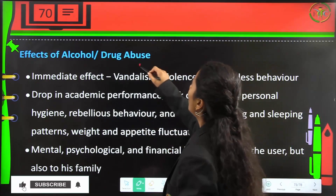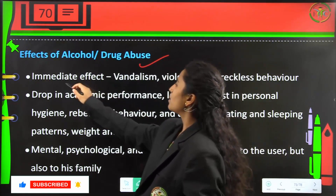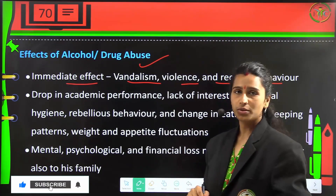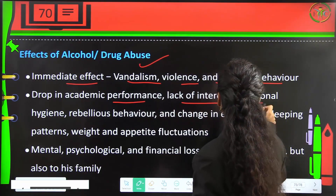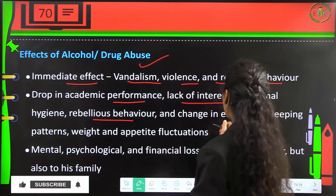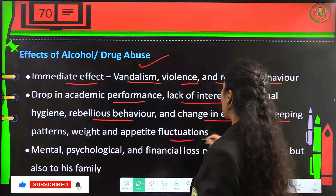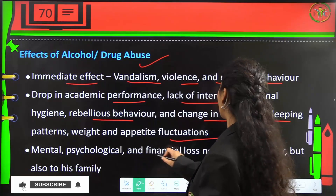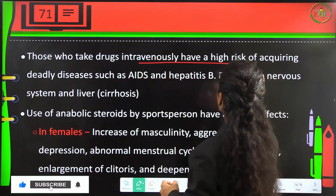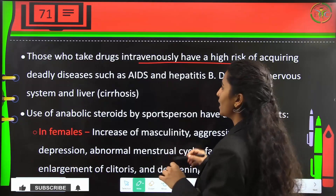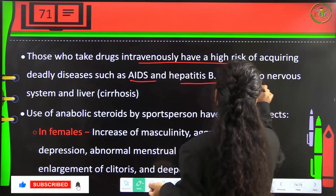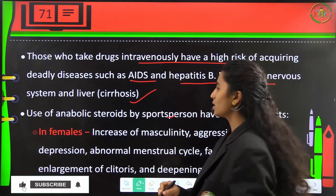Immediate effects of alcohol or drug abuse include vandalism, violence, and reckless behaviour. Other effects are drop in academic performance, lack of interest in personal hygiene, rebellious behaviour, changes in eating and sleeping patterns, weight and appetite fluctuations, and mental, psychological, and financial loss — not only to the user but also to the family. Those who take drugs intravenously have a high risk of acquiring AIDS and Hepatitis B. There is also damage to the nervous system and liver, causing cirrhosis.